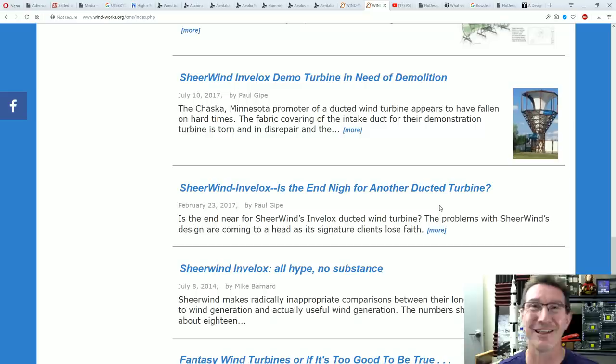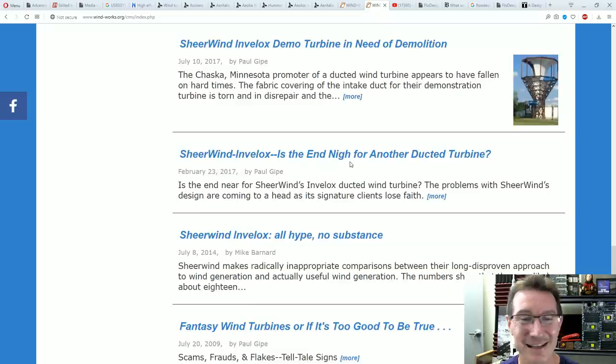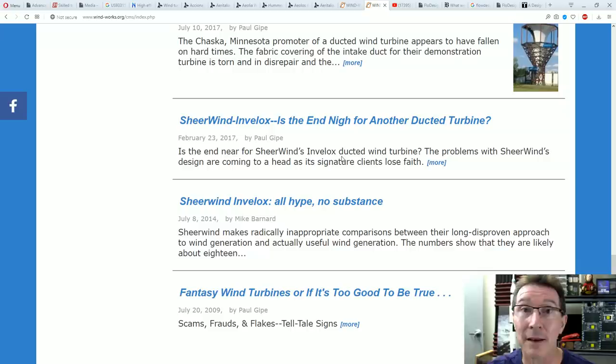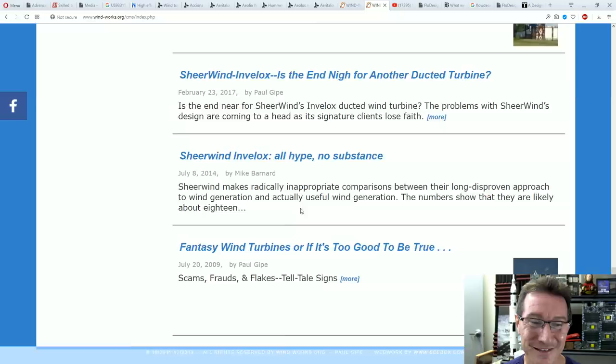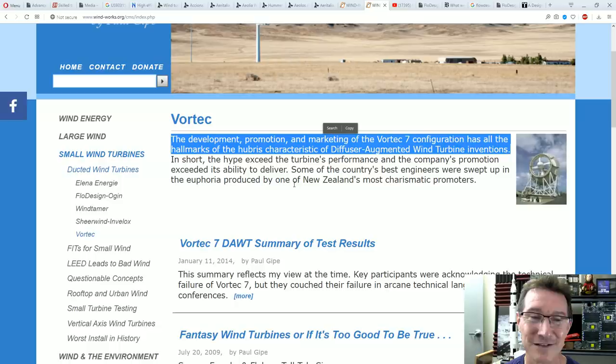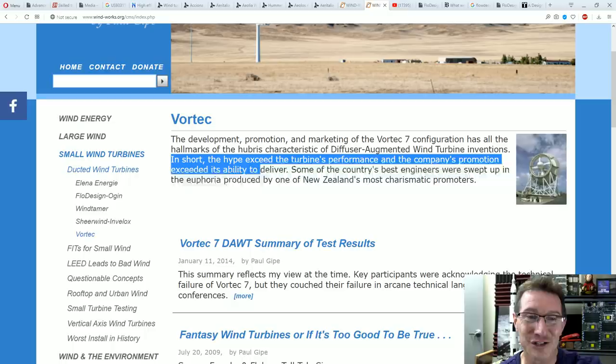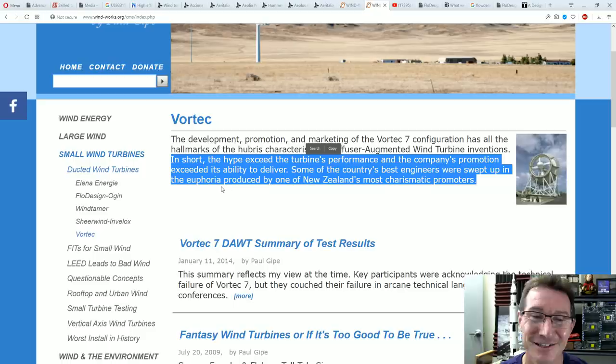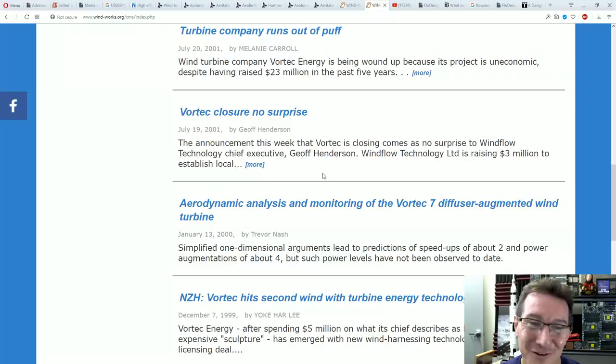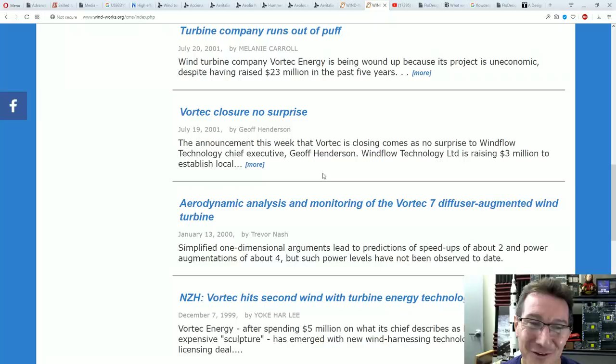Demolish them all, none of them work. Well, they work like solar roadways and other things work, but they're just not as practical and not nearly come close to their claims. If they did, the wind industry would take them up and they'd be billionaires, but nah, they've all gone bankrupt, all hype no substance. The development, promotion and marketing of the Vortex 7 configuration has all the hallmarks of the hubris characteristic of diffuser augmented wind turbine inventions. In short, the hype exceeded the turbine's performance and the company's promotion exceeded its ability to deliver. Some of the country's best engineers were swept up in the euphoria produced by one of New Zealand's most charismatic promoters. Turbine company runs out of path, Vortex closed, no closure, no surprise.